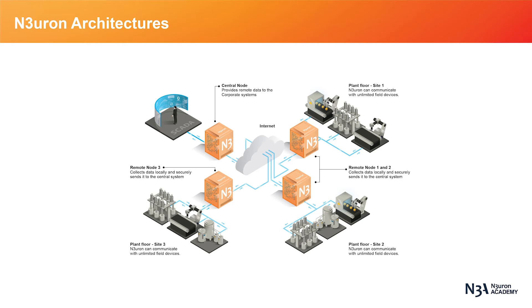The other most common type of growth is growth in a geographical sense, where multiple facilities are spread out over a wide area. As the number of facilities grows, each of Neuron's remote nodes acts as an edge gateway, collecting data locally and sending it to the central server.